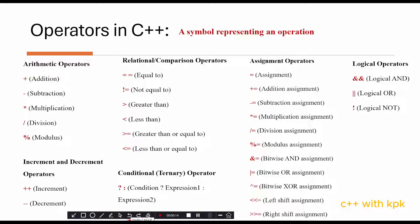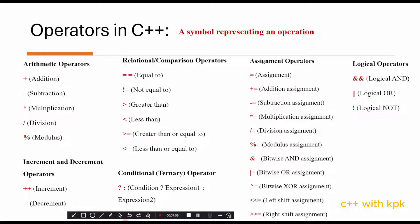Next is the bitwise AND assignment. What happens is that it performs a bitwise AND operation on a and b and stores the result in a. For example, a &= b performs the bitwise AND and stores the value in a.